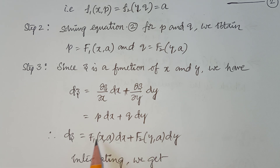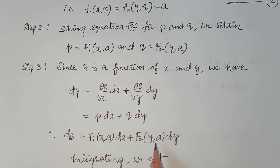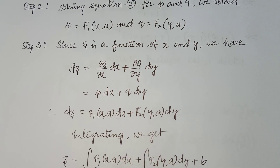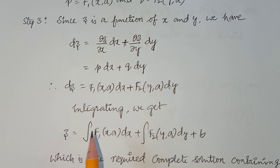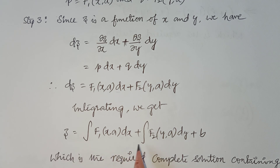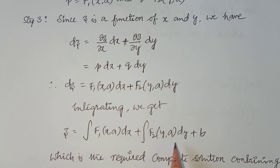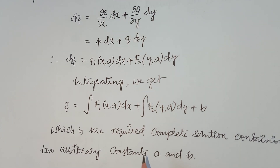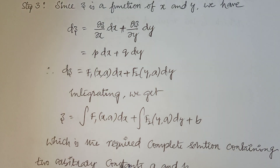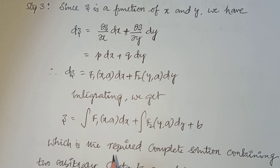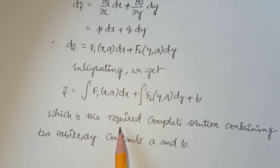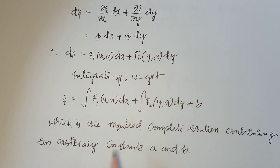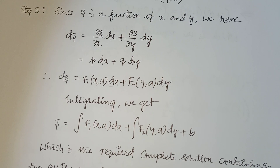The dx coefficient is a function of x and constant a; the dy coefficient is a function of y and constant a. Now we can integrate both sides. Integrating gives the final solution: z = ∫f1(x, a) dx + ∫f2(y, a) dy + b, which is the required complete solution containing two arbitrary constants a and b.